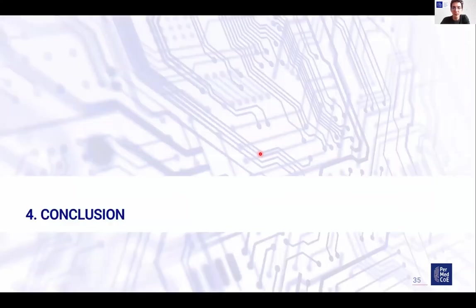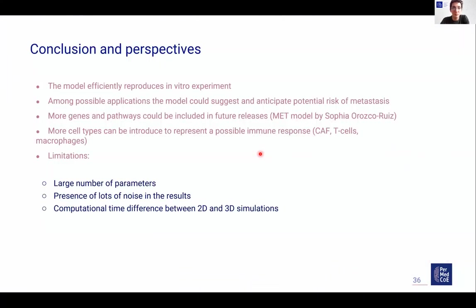To conclude about the model: it can efficiently reproduce in vitro experiments, and among possible applications the model can suggest and anticipate the potential risk of metastasis. More genes and pathways will be included in future releases. Currently, Sofia Orozco-Ruiz, a former master student in our lab starting her PhD, worked on a MET model — the idea being to include MET into the EMT model. More cell types could be introduced to reproduce immune responses like cancer-associated fibroblasts, T-cells, or macrophages. Limitations include the large number of parameters (being improved in the new version thanks to updates of PhysiCell and PhysiBoss), noise in the results, and significant computational time differences between 2D and 3D simulation — 2D takes a couple of minutes, 3D can take up to one hour.